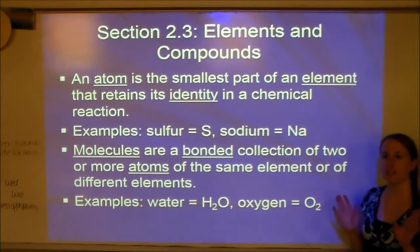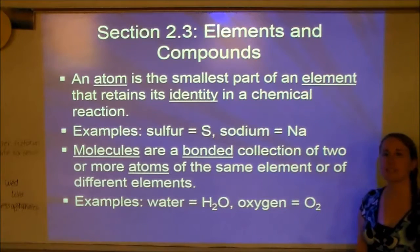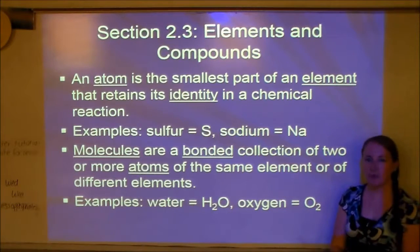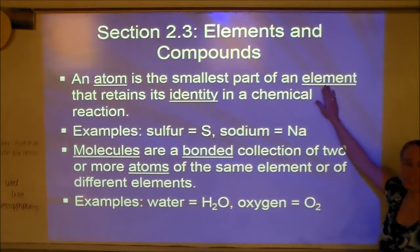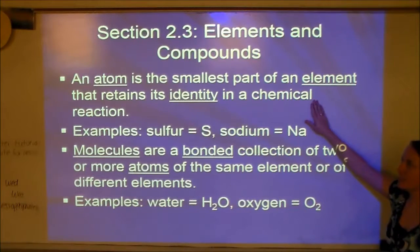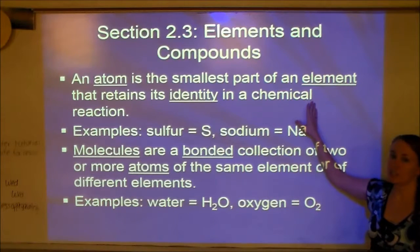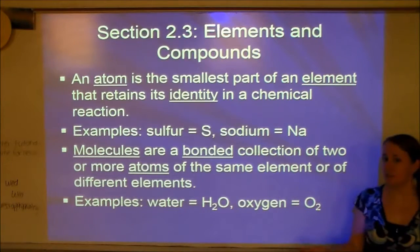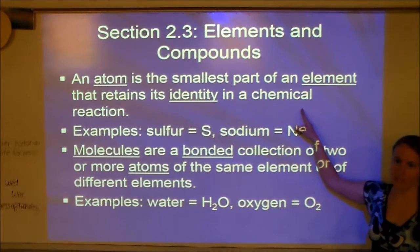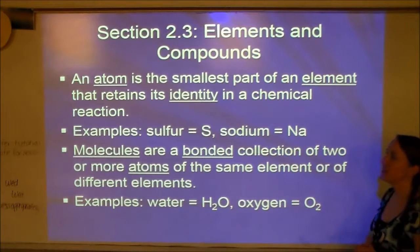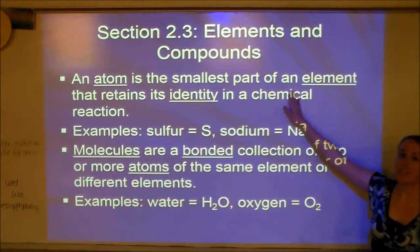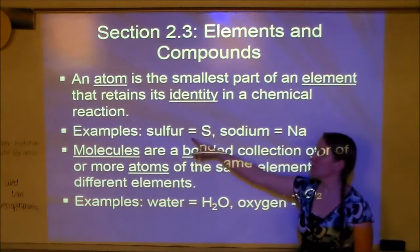Section 2.3 is on elements and compounds. We've already discussed states of matter like solid, liquid, gas, and plasma, and we've discussed mixtures. Now we're going to get to elements and compounds. An atom is the smallest part of an element that retains its identity in a chemical reaction. Atoms cannot change into different types of atoms — oxygen atoms cannot turn into hydrogen atoms through physical or chemical means.